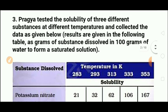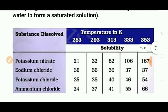The next question: Prajya tested the solubility of three different substances at different temperatures and collected data. Solubility is always checked per 100 grams of solvent when preparing a saturated solution. She used potassium nitrate, sodium chloride, potassium chloride, and ammonium chloride at five temperatures: 283K, 293K, 313K, 333K, and 353K.